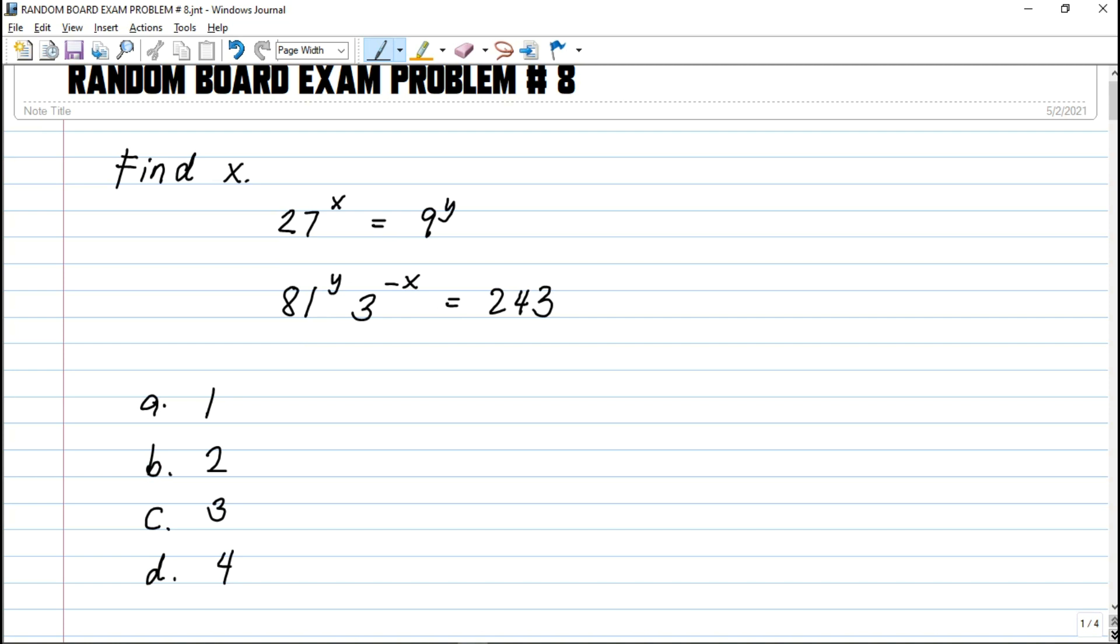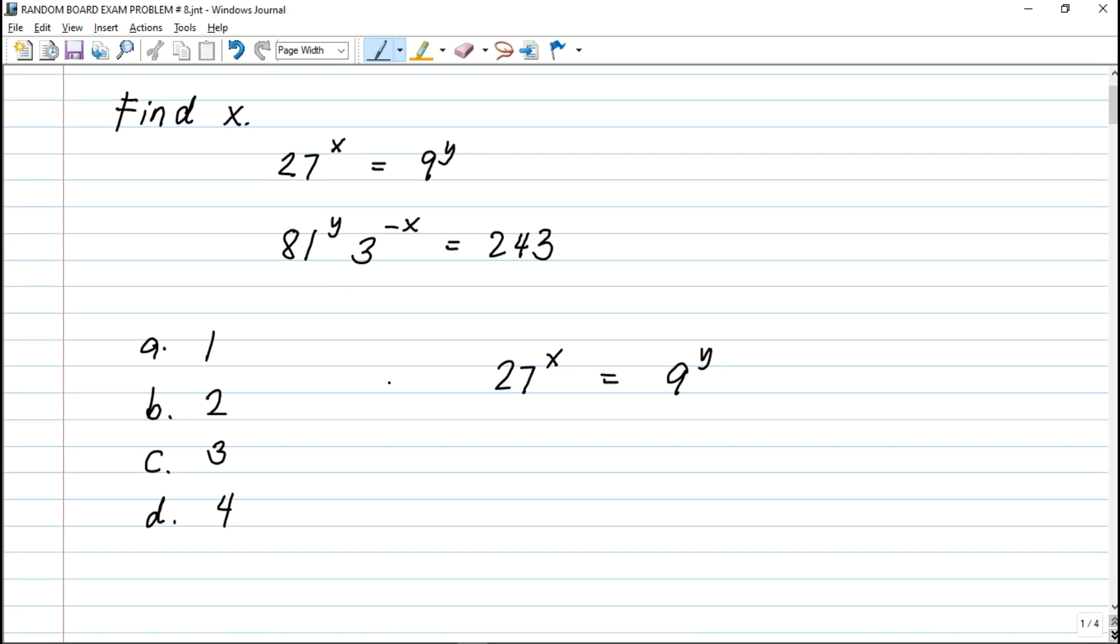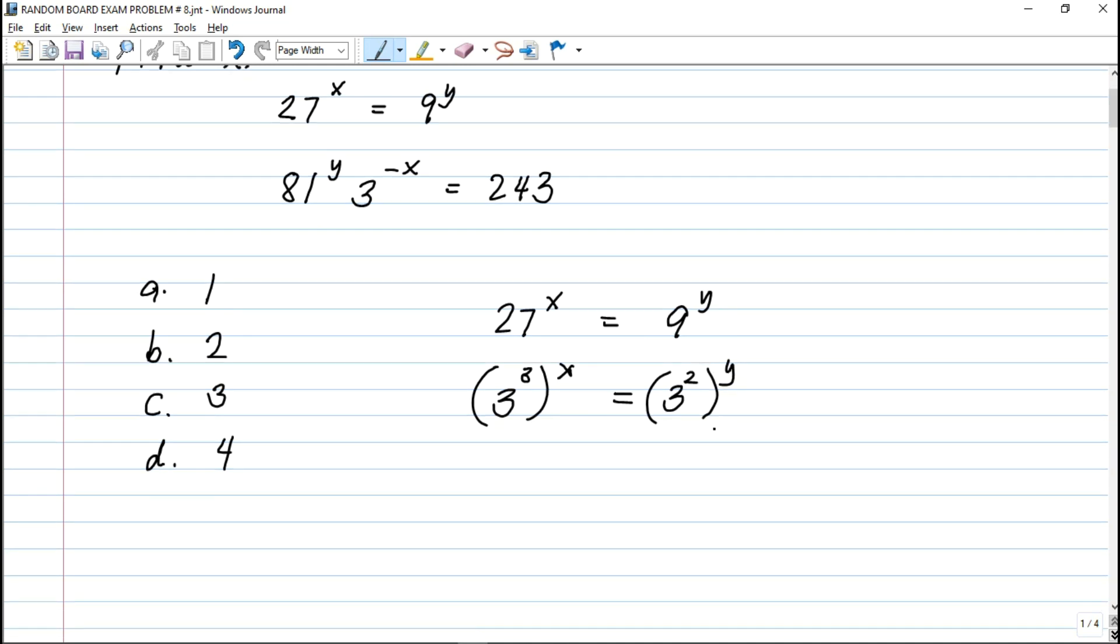From equation number 1, that is 27 raised to x equals 9 raised to y. The bases should be the same in order for us to actually equate the exponent. The common factor is 3. Let's change 27 to base 3. That is 3 cube raised to x. Then we have 3 squared, which is 9, raised to y. Same base na sya guys.